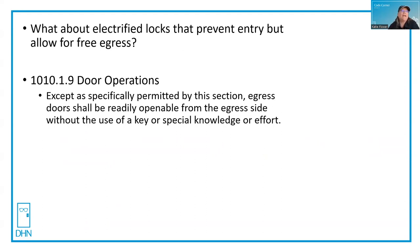For all other doors, section 1010.1.9 for door operations is in effect: except as specifically permitted by this section, egress doors shall be readily openable from the egress side without the use of a key or special knowledge or effort. If it isn't referencing UL 294 here, then you don't need that for standard electrified hardware that allows free egress. You may be able to use this citation to talk to your AHJ and get them to see your side.